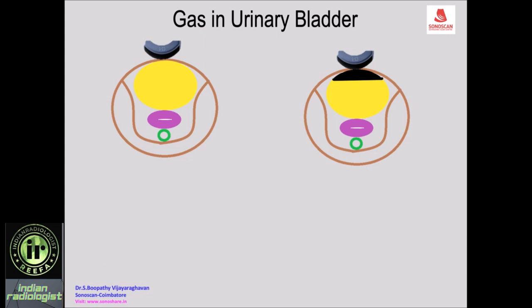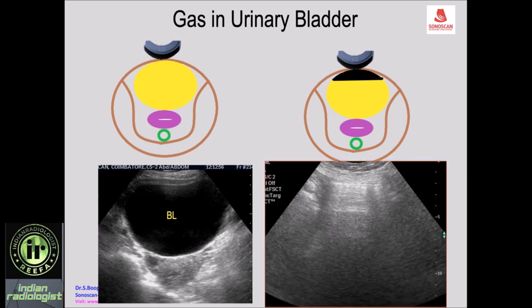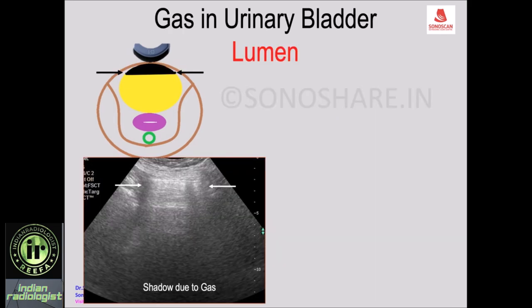So how to differentiate? When there is a normal urine-filled urinary bladder, you see the bladder filled with fluid and you are able to see the uterus and right ovary in a female patient because the fluid allows ultrasound to travel. But when there is gas in the urinary bladder and the patient is supine, the gas is in the anterior part — the non-dependent part — producing an echogenic line with a dirty shadow.